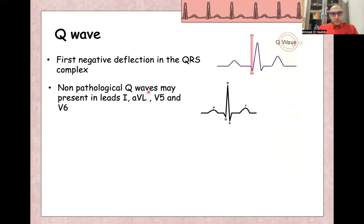Normal or non-pathological Q wave can be present normally in lead one, AVL, lead five, V5, and V6.